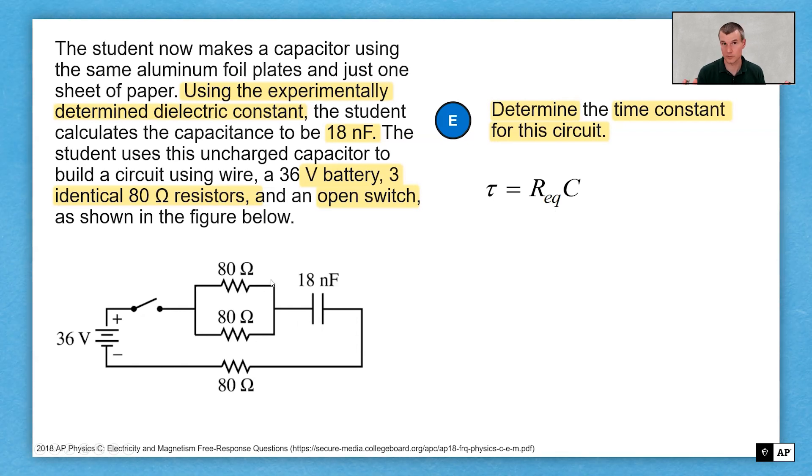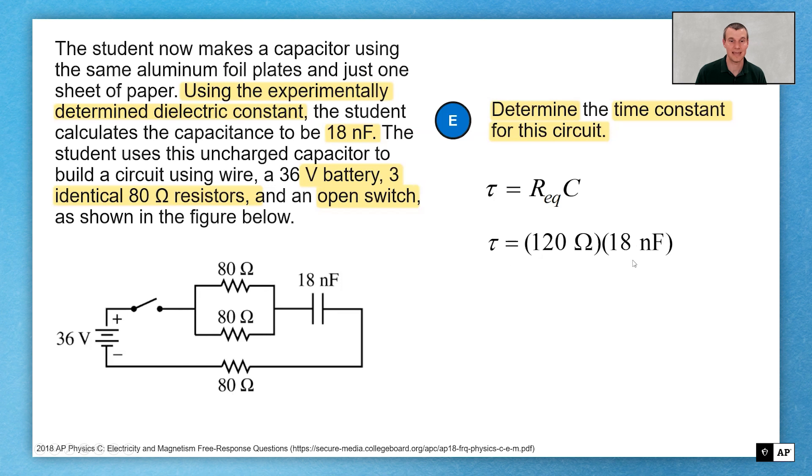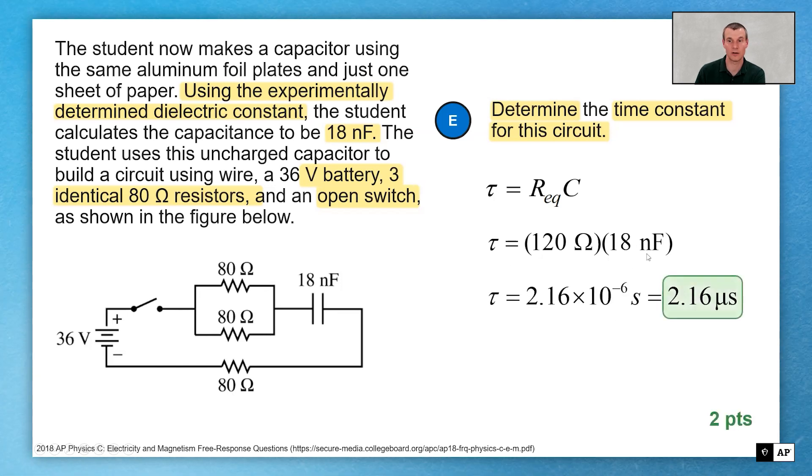Where this R is the equivalent resistance of the circuit, or technically, it's all the resistors that are in series with this capacitor. Because this whole circuit can be broken down into resistors in series with the capacitor, this all works out. The 120 ohms that I solved for previously, the 80 and the 80 that were parallel and the 80 that was in series, 120 times my 18 nanofarads, remembering that nano is 10 to the negative 9.